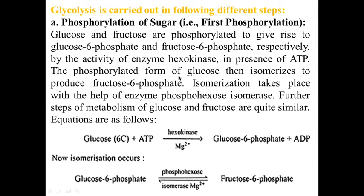The phosphorylated form of glucose then isomerizes to produce glucose-6-phosphate. Isomerization takes place with the help of the enzyme phosphohexose isomerase. The further steps of metabolism of glucose and fructose are quite similar. The first step: one molecule of glucose, a 6-carbon compound, combines with one ATP with the help of enzyme hexokinase and one magnesium ion to form glucose-6-phosphate. This glucose-6-phosphate, with the help of enzyme phosphoglucose isomerase, gives fructose-6-phosphate.